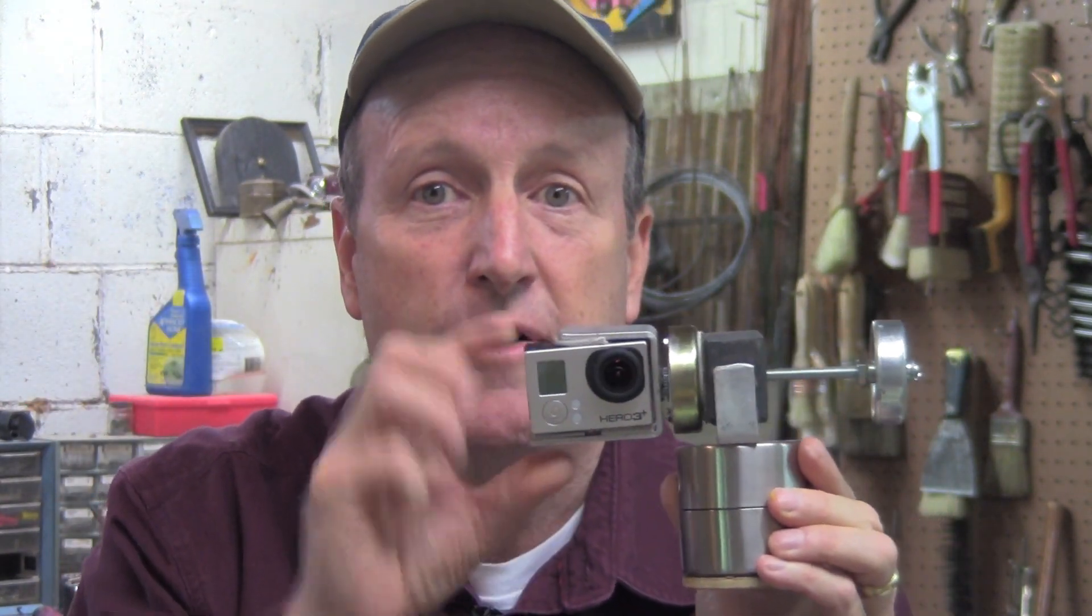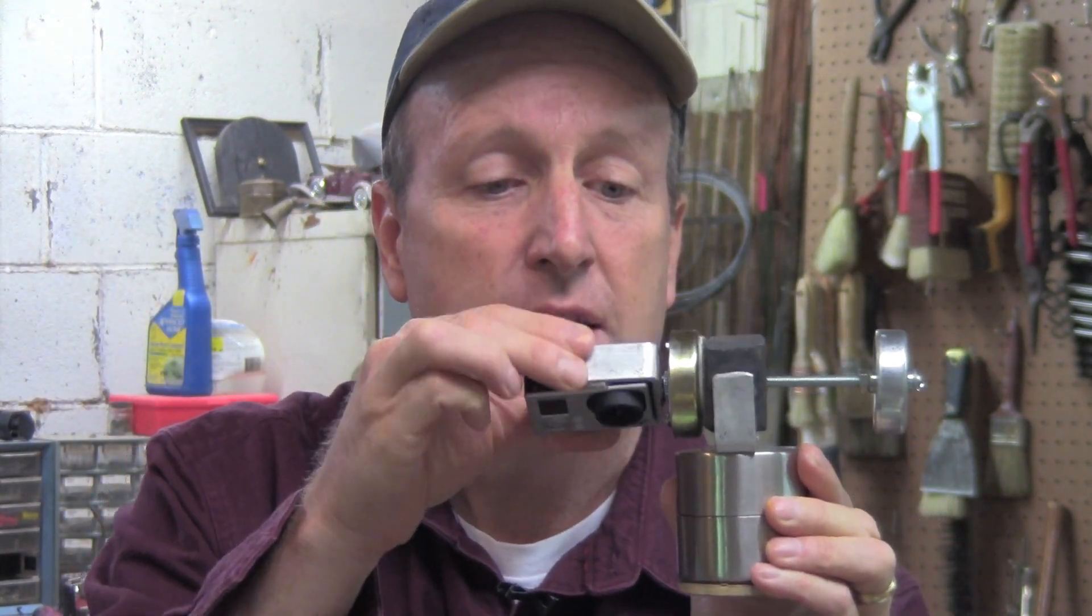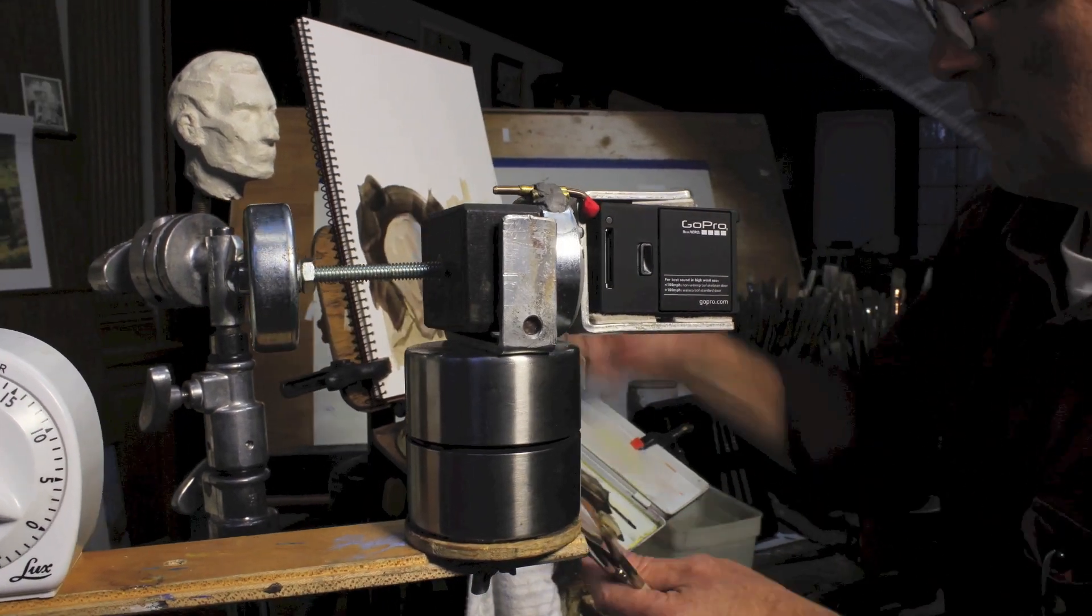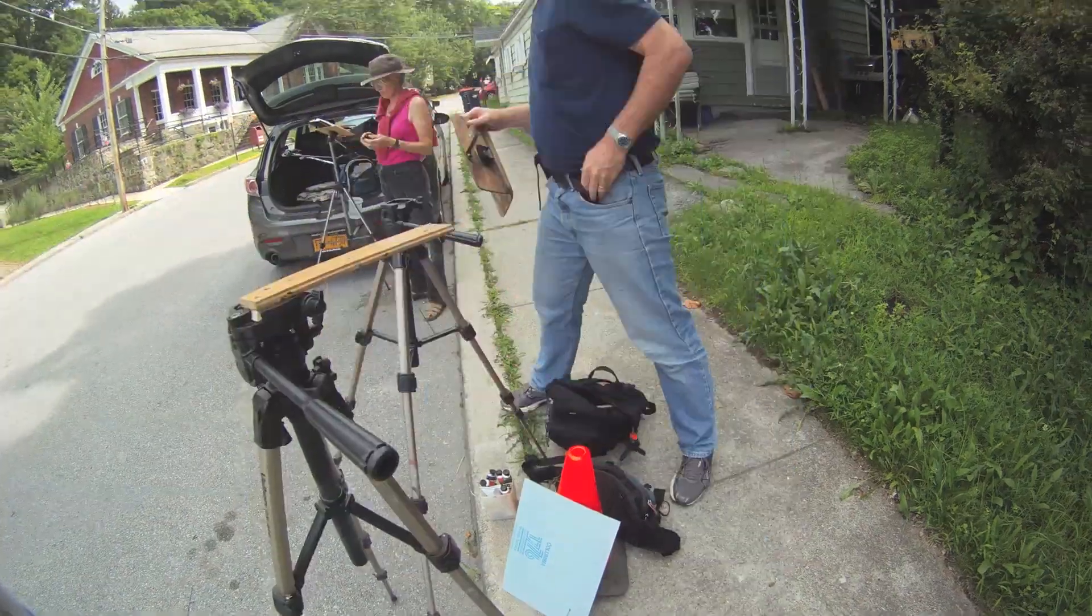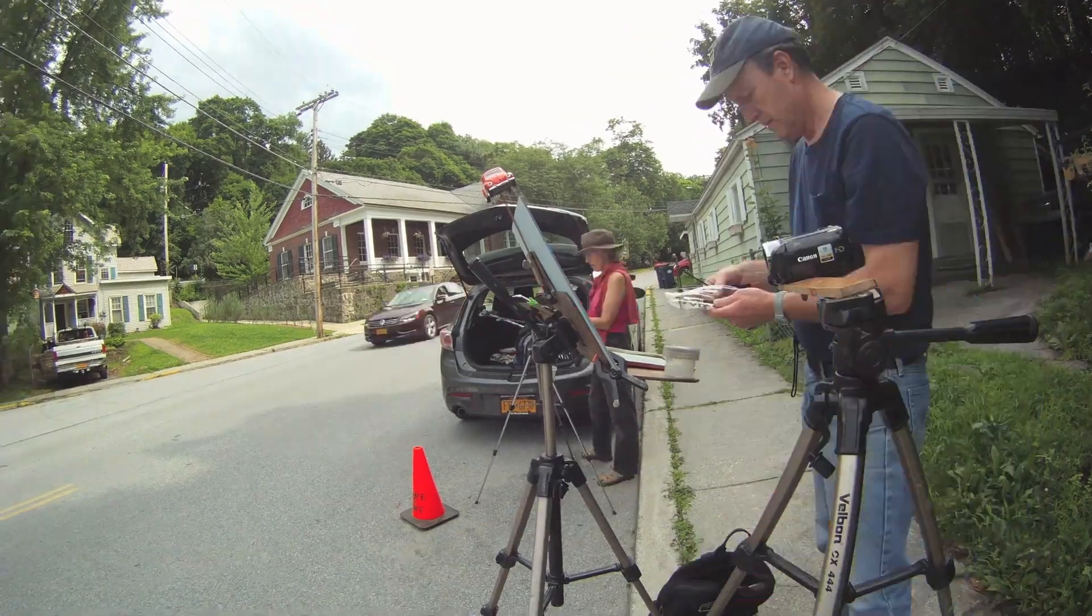Hi, James Gurney here. I want to show you how to make a device out of simple household materials, including egg timers, that takes your GoPro and allows it to shoot time lapse that has both a tilt and a pan movement, so it can move up and to the side.